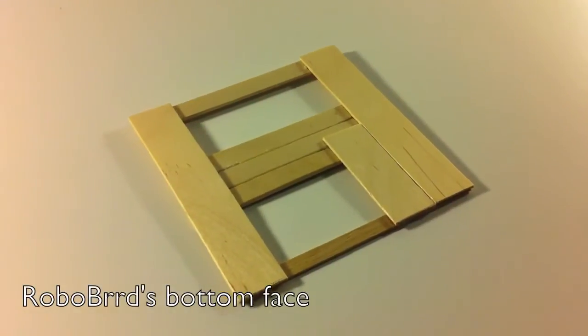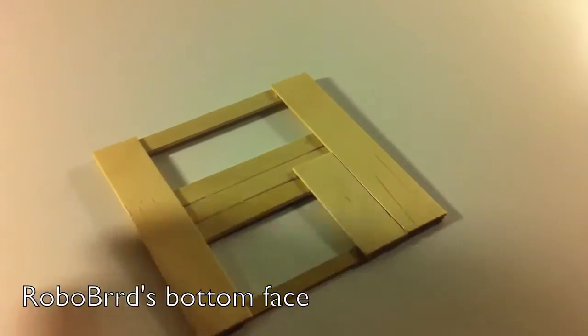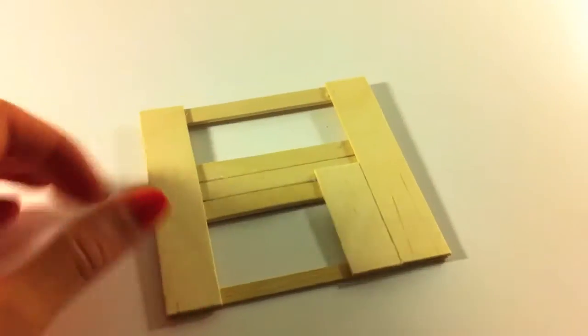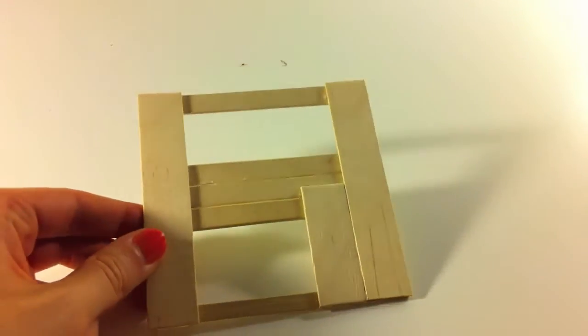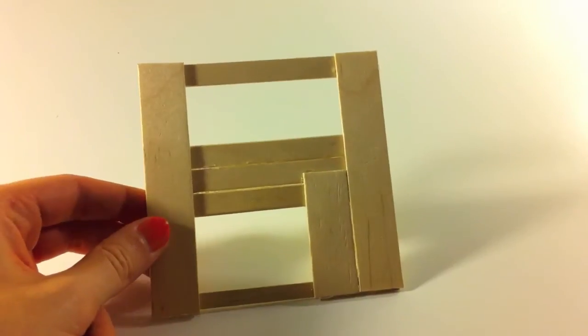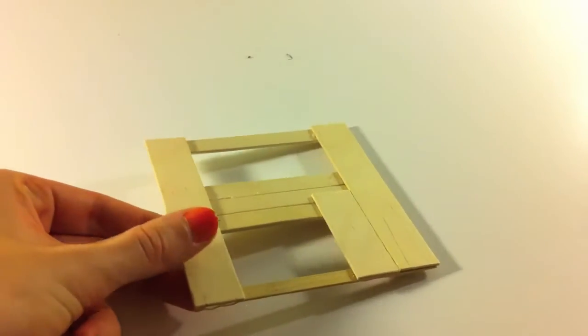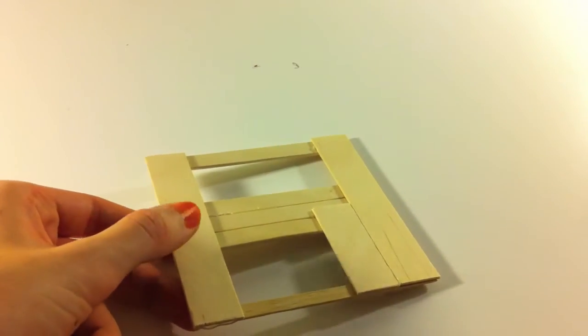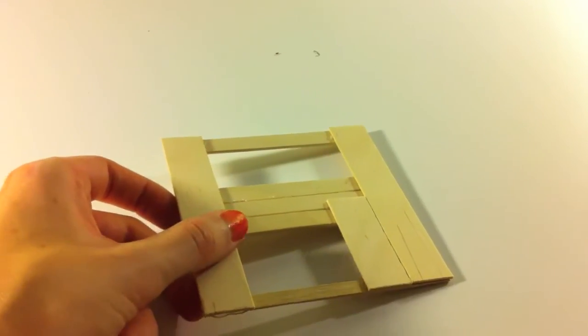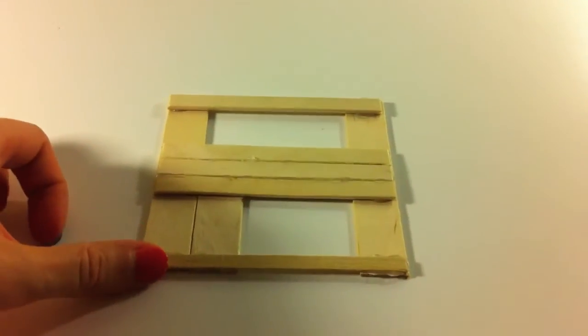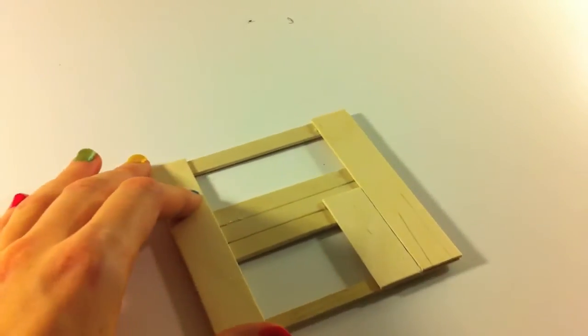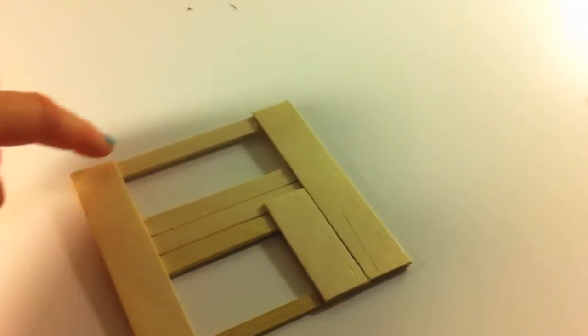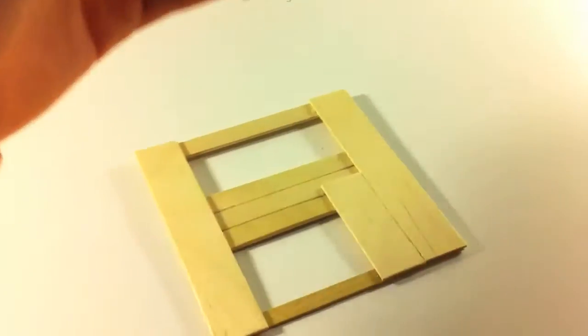This is the base of the RoboBird, the very first thing that we're creating, and as you can see it's quite a simple piece. This is the side that would be towards the inside of the RoboBird with all the servos on it, and then this is on the back side or on the bottom. And up here is where the front face will be standing up.